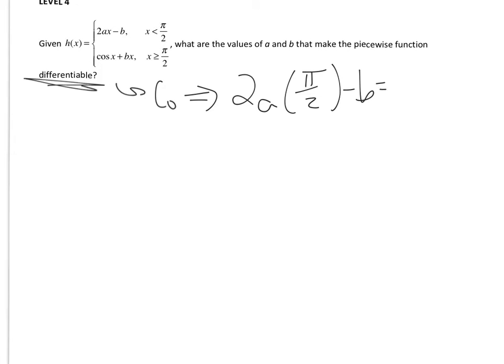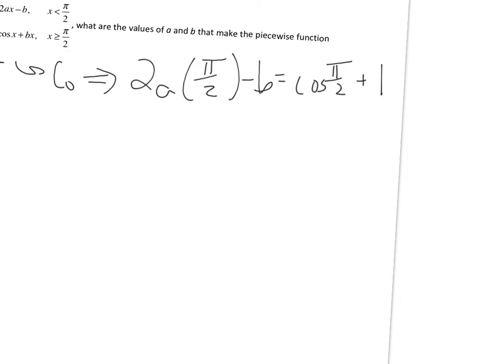Minus b has to be equal to the cosine of pi over 2 plus b times x, which will be b times pi over 2. So for the continuity piece, I'm going to get it when I clean it up.